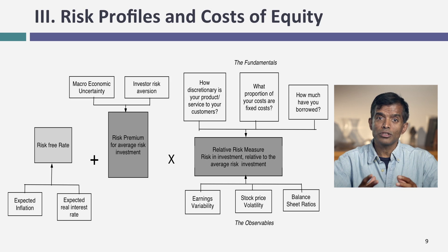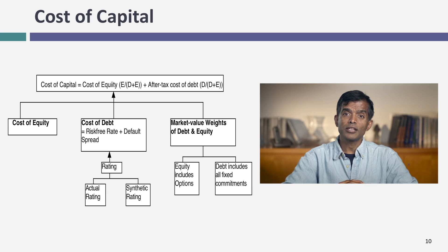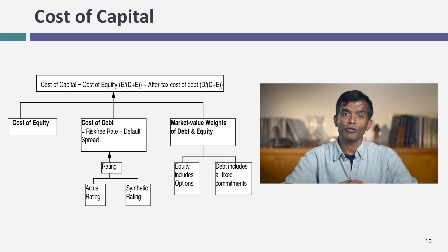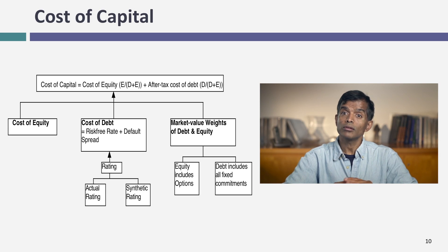Instead, we looked at the business you're in, a sector average beta, or another creative way of measuring relative risk. That cost of equity goes into a cost of capital. The big item there is the cost of debt — the rate at which you can borrow money long-term today. To get it, you build up by taking the risk-free rate and adding a default spread. That default spread you can estimate either because you have an actual rating for the company, or if not, try to get a synthetic rating. Do not use the book interest rate as your cost of debt. For cost of capital, the weights have to be market value weights — try to estimate a market value of debt as well.